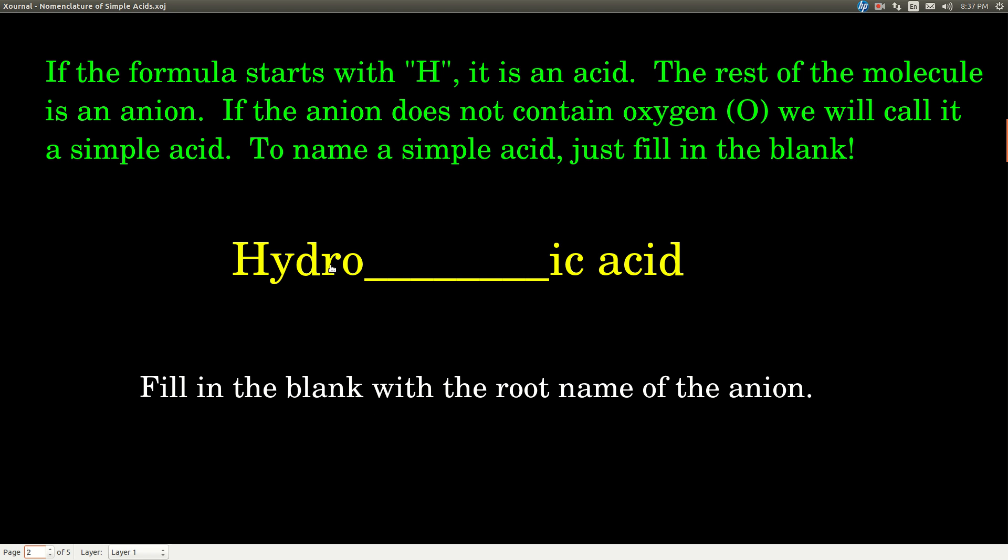So the formula will always look like this: hydro-blank-ic acid. You're just filling in the blank. What goes in the blank? The root name of whatever the anion is. And that's it. Fill it in. You got it.